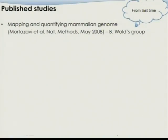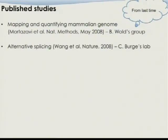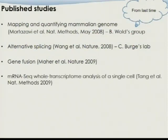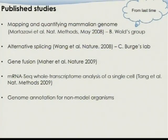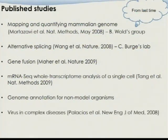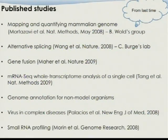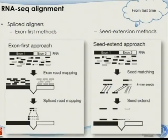We went through several published studies: the first RNA sequencing paper mapping and quantifying mammalian transcriptomes by the Bauer-Woods group; a study on alternative splicing using RNA-seq from Chris Burge's lab; gene fusion; mRNA sequencing at the single-cell level; genome annotation for non-model organisms where reference genomes are unavailable; RNA-seq in complex disease; and small RNA profiling, which we'll get into today regarding data analysis.